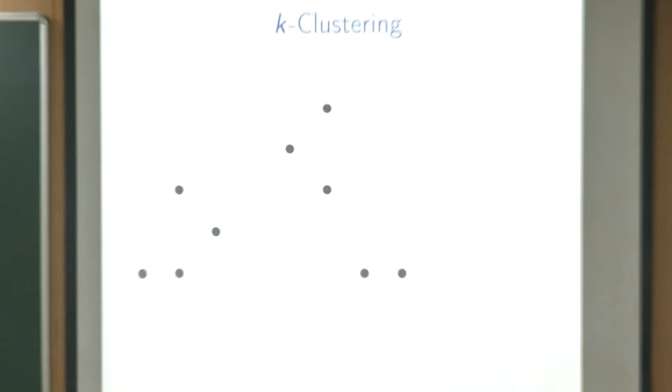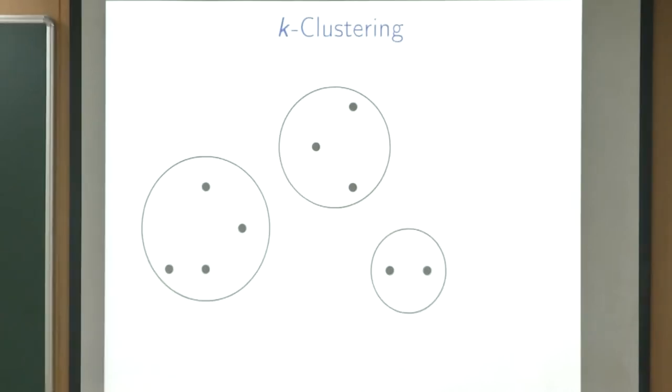The problem we're interested in is the clustering problem. The input is a set of points in the plane, or in higher dimension, generally in R^d. We want to cluster them — split them into clusters, saying this point is in the first cluster, this point in the second cluster, this point in the third cluster. We also want to pick some cluster center — another point for each of the clusters.